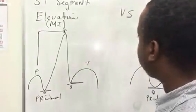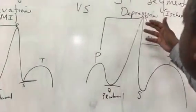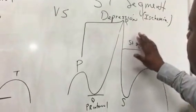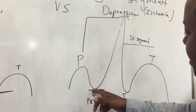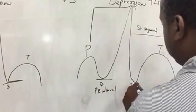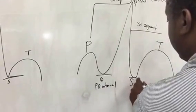Now in ST segment depression, which tells you myocardial ischemia, what we do, we look the same way. We look at our baseline. This is our PR interval. And the ST segment is here. So it's lower.